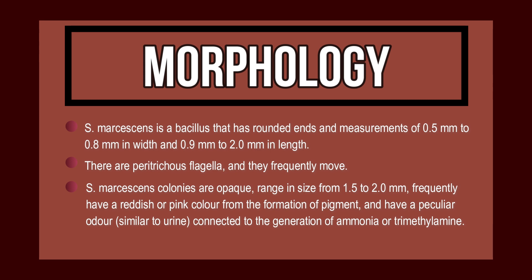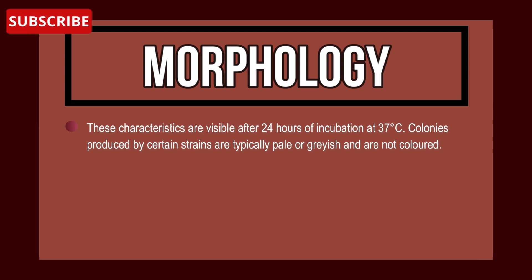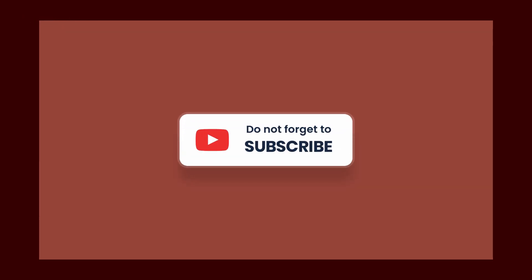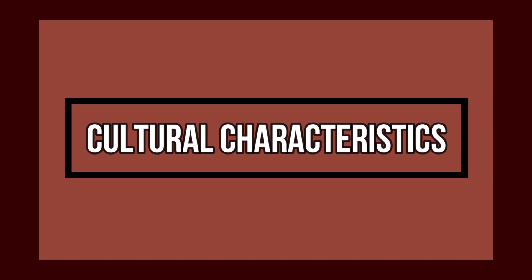Colonies frequently have a reddish or pink color from the formation of pigment, and have a peculiar odor similar to urine, connected to the generation of ammonia and trimethylamine. These characteristics are visible after 24 hours of incubation at 37°C. Colonies produced by certain strains are typically pale or grayish and not colored.